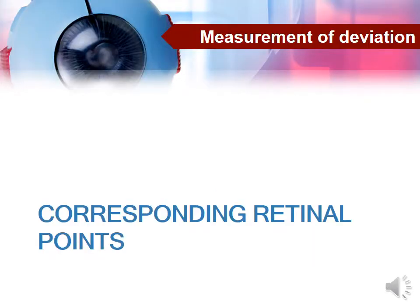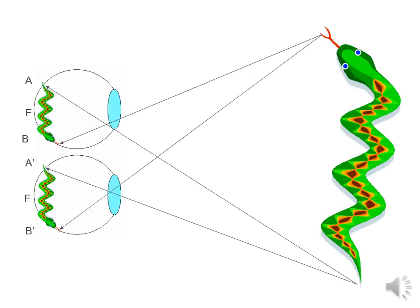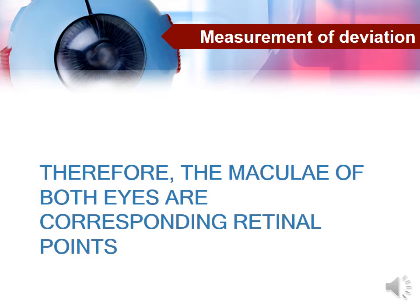The second principle depends on the presence of corresponding retinal points in both eyes. Normally the image falls on the retina of both eyes — for example, the head of a snake would fall on a point on the temporal retina of the right eye and a point on the nasal retina of the left eye, while the tail would fall on the nasal retina of the right eye and the temporal retina of the left eye. These are called corresponding retinal points. In clinical practice, the most important corresponding retinal points are the foveas of both eyes — normally the image falling on the fovea of one eye falls on the fovea of the other.